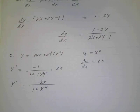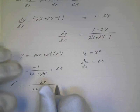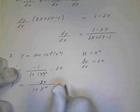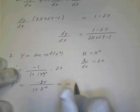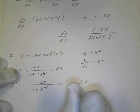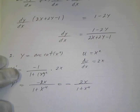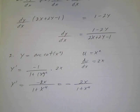That's y prime. You can put the negative in front of the fraction: negative 2x all over 1 plus x to the fourth. So that's not too bad.